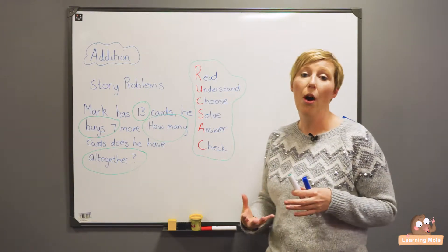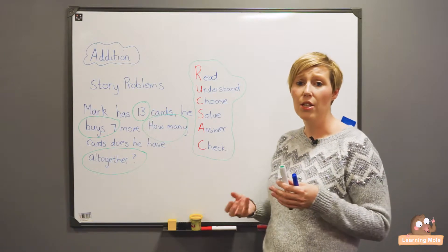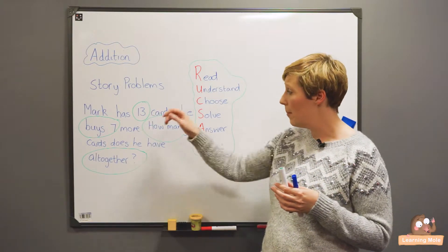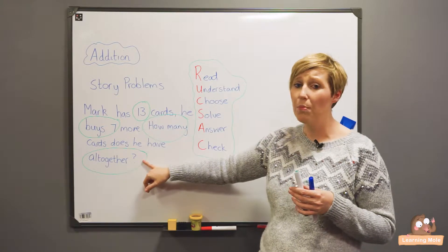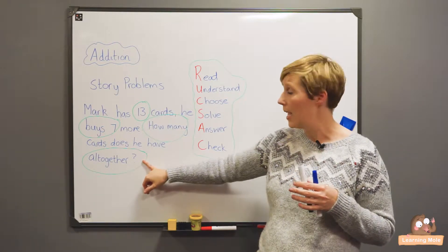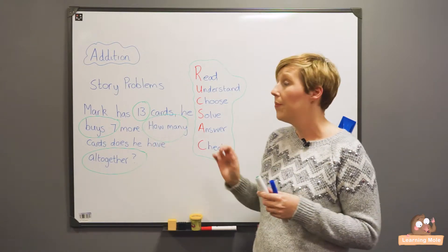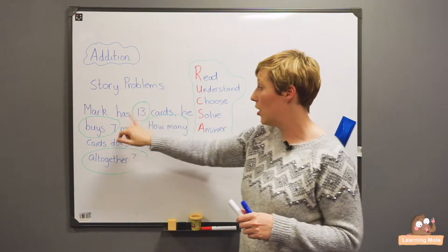Choose is now to choose your operation, choose the calculation, choose what you're actually going to do to solve this. So I'm looking back and thinking altogether is probably telling me to add in this scenario and I've got my numbers 13 and 7.